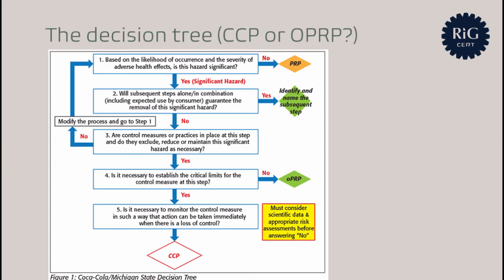Let's go through the steps. Step one: is the hazard significant? Based on the results of the hazard assessment. ISO 22000 requires controls only for hazards identified as significant. If the hazard is not significant, then the prerequisite programs — PRPs — are sufficient, and we don't need to go further.